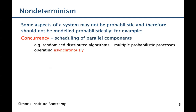Some examples of this are concurrency in the scheduling of parallel components. For example, in randomized distributed algorithms, we have multiple probabilistic processes that do have probabilistic behavior but operate asynchronously. So we don't know the ordering in which they move, and we want to consider all possible interleavings. So it doesn't make sense to model this probabilistically.